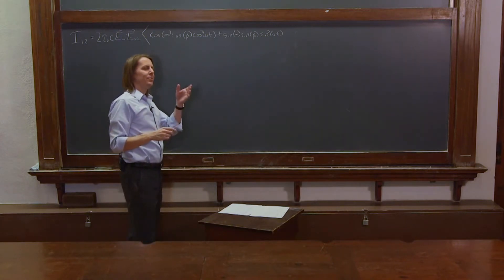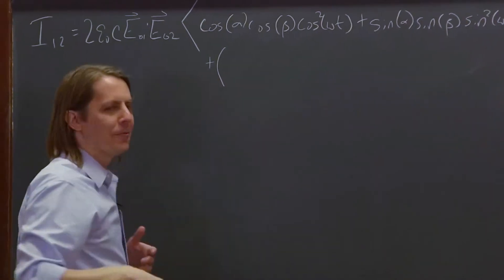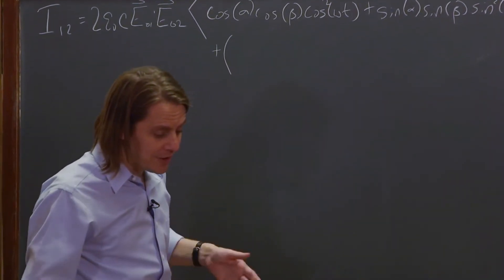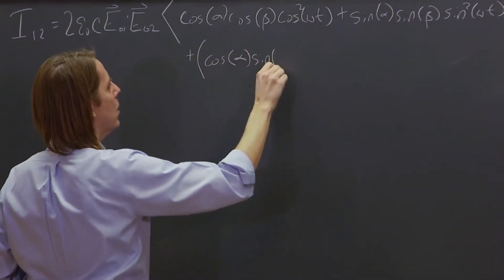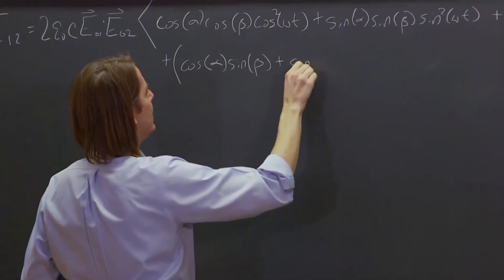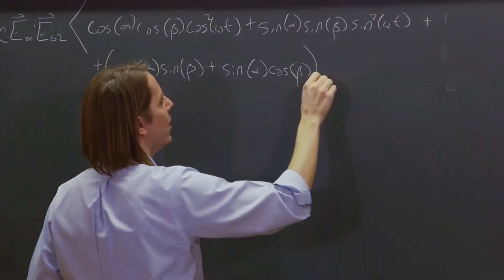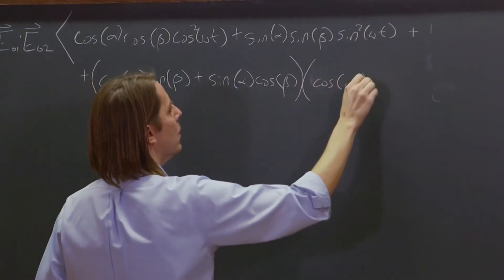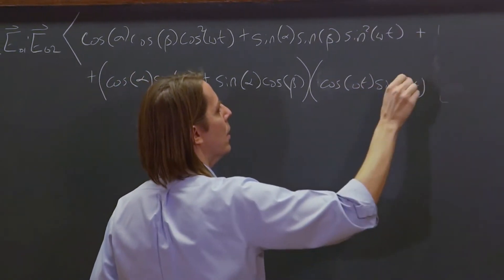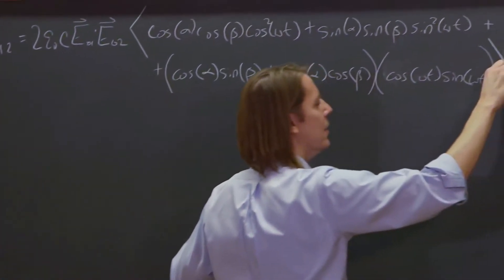And then the cross terms, each is times sine omega t, cosine omega t. But there's two of them, so I'm going to put them together first. And the things that go in front of sine omega t, cosine omega t, if you go back and foil the whole thing, is cosine alpha sine beta plus sine alpha cosine beta. And those are times cosine omega t, cosine omega t. So that's everything in the time average.